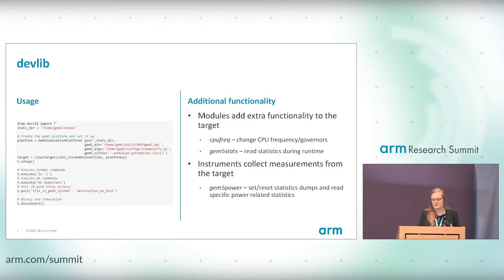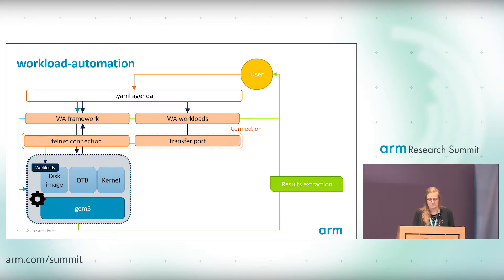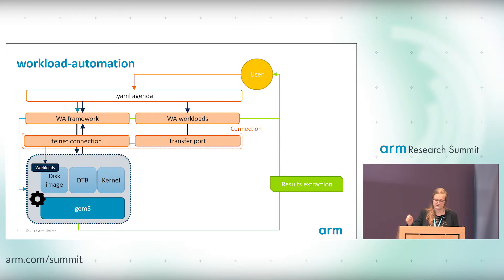WA works slightly differently — same concept but different. In WA, you create a YAML agenda, which is basically a configuration script. Based on what's in the YAML agenda, the WA framework will create a GEM5 setup for you. The interesting thing is that once you've created the YAML agenda, you don't interact with GEM5 anymore — WA will do everything for you. It will set up GEM5, extract workloads from WA's own library, and push them onto GEM5. It can also repeat runs — you can say you want to run a workload five times and WA will start the simulation five times. At the end of the run, you can extract results from the stats file, and WA will report whether or not a workload ran correctly — for example, in the case of Dhrystone, it gives you DMIPS for every run.